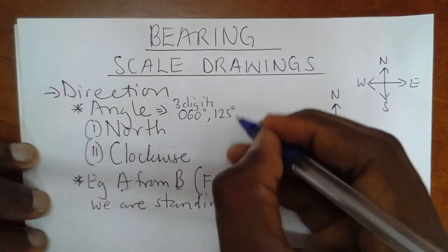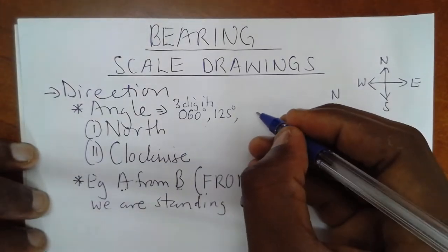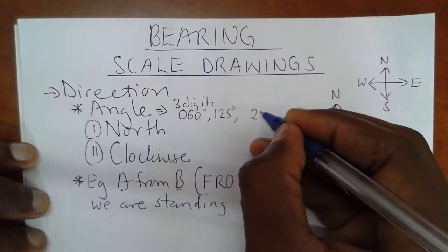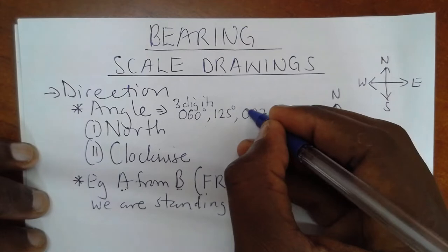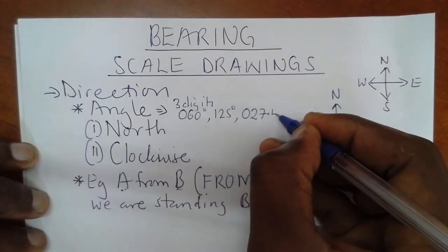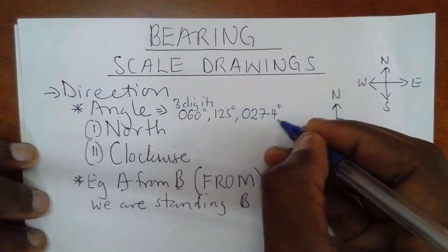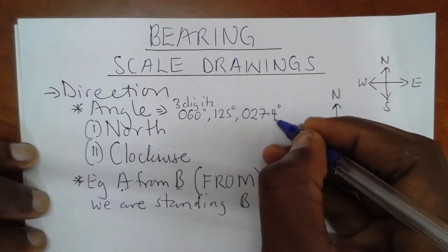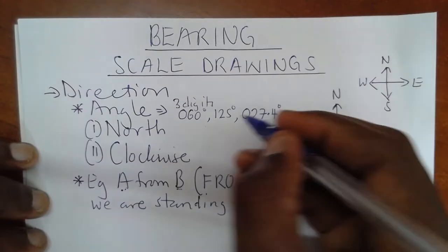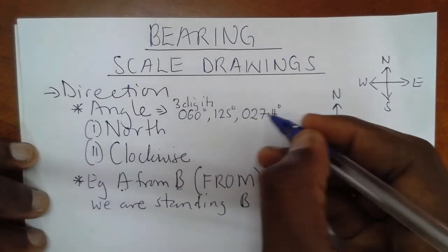But also sometimes we can get decimal point. If you get two digits and if you get decimal points, first of all, add a zero and keep only one decimal place. So if you have many decimal places, round them off to one decimal place. So this is how we have to follow the laws of bearing.